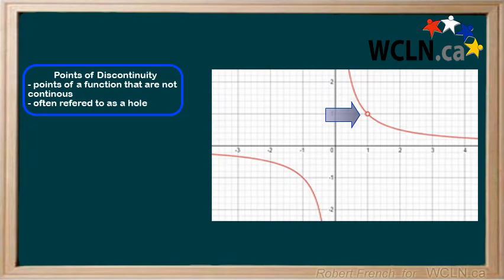Points of discontinuity are points in a function that are not continuous. They are often referred to as a hole and drawn using a circle.